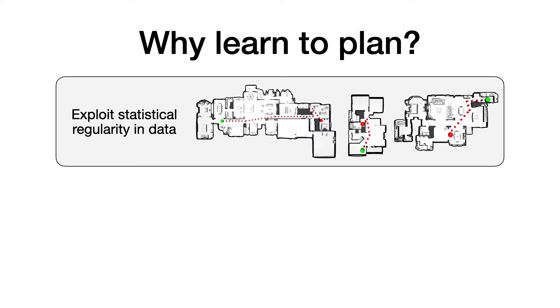A learned planner, represented by a neural network, can not only capture these regularities but can also be efficient at inference time as the plan is just a result of a forward pass through the network.